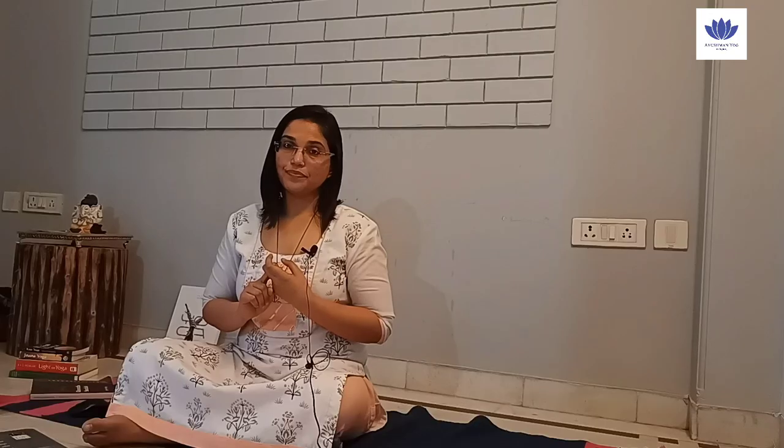In Gheranda Sahita, four types of dhoti are mentioned: antar dhoti, dant dhoti, hrid dhoti, and mool shodhan. Under antar dhoti, there are four subtypes. The first is vatasar — 'vat' means air — cleansing done with the element air, also known as plabini. The process involves gulping air through the mouth in kaki mudra, shaping the mouth like a crow's beak, and letting the air pass through the anal route.